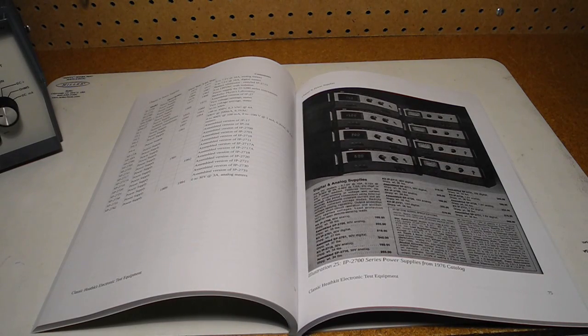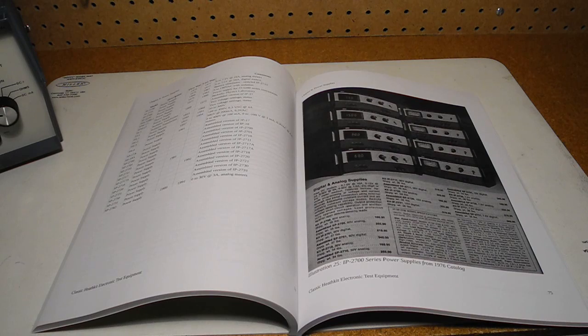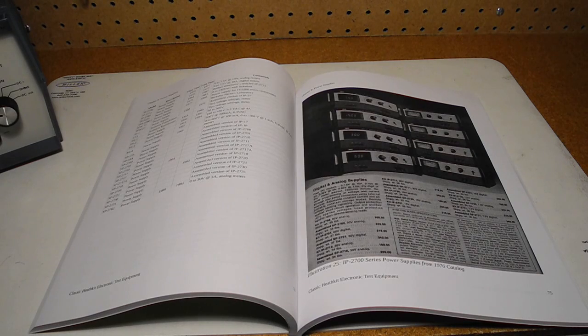Separate chapters cover all the major categories of electronic test equipment, and each chapter includes one or more in-depth sections that look at a representative model from my Heathkit collection, covering its features, operation, and notable quirks or trivia. The book is available from lulu.com and Amazon, and retails for U.S. $19.95.